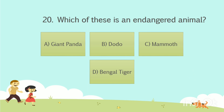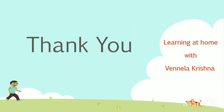The answer is Option D: Bengal tiger. Dodo is a bird and Mammoth is a type of elephant. Please subscribe to my channel and press the bell icon for new videos. Thank you for watching.